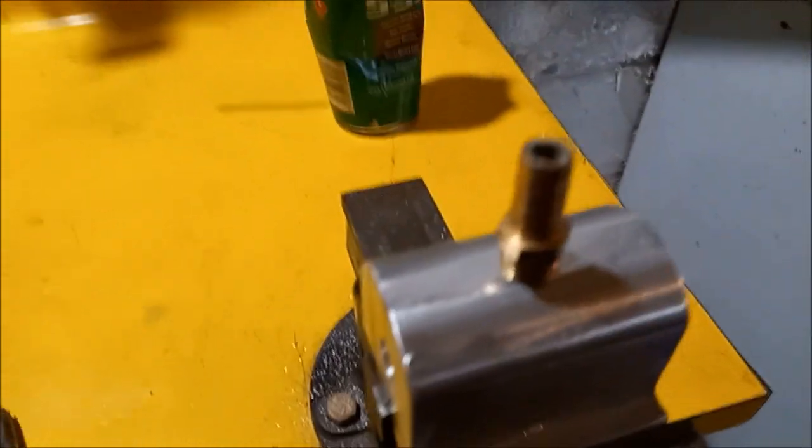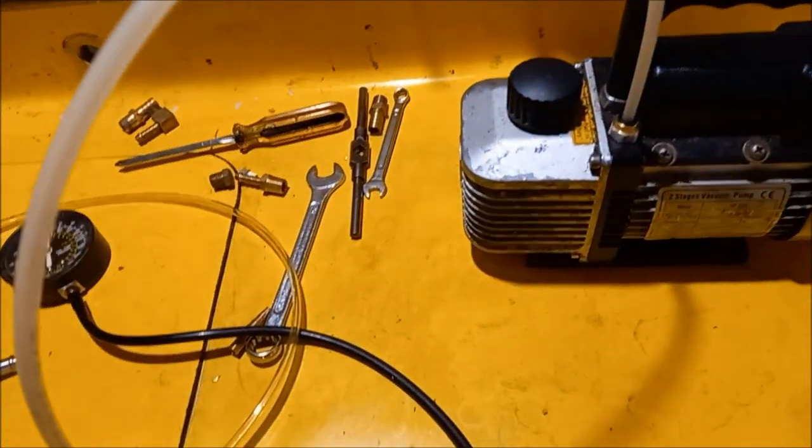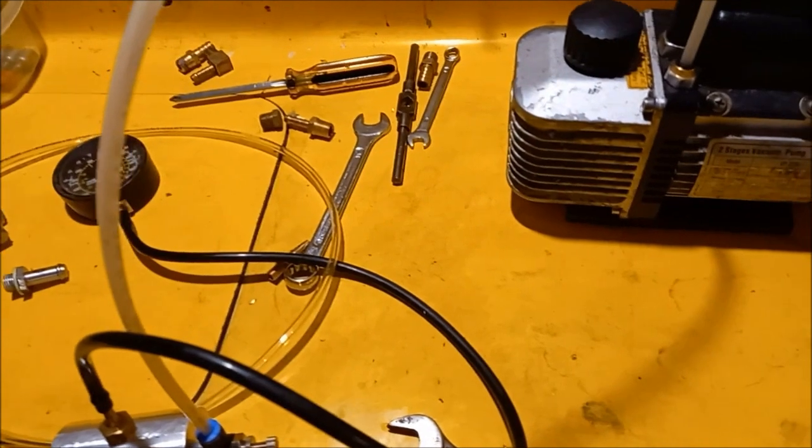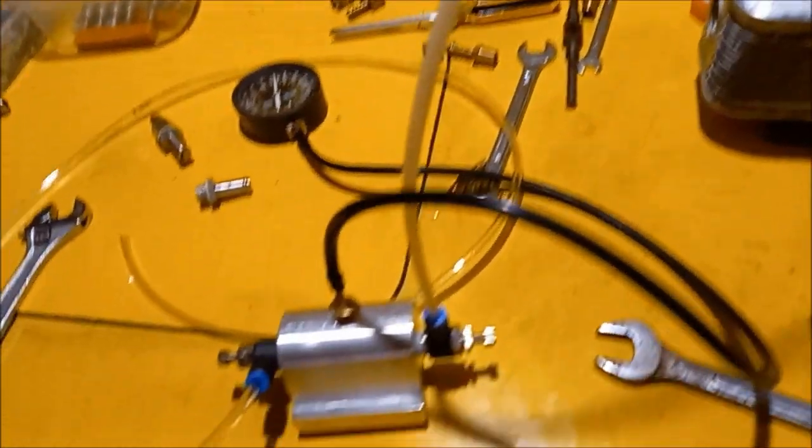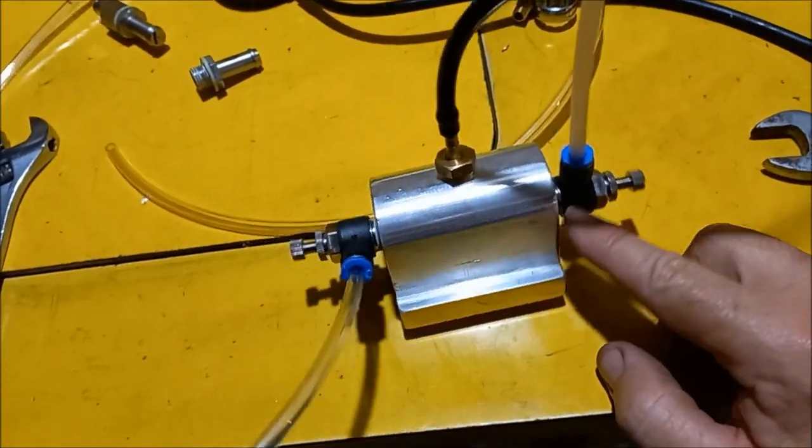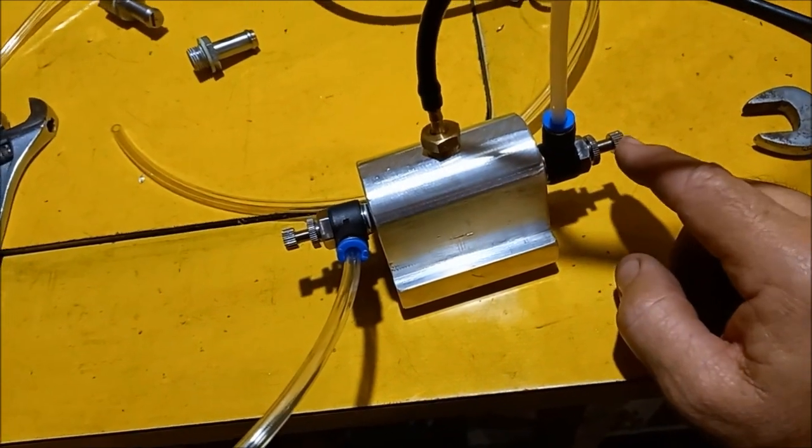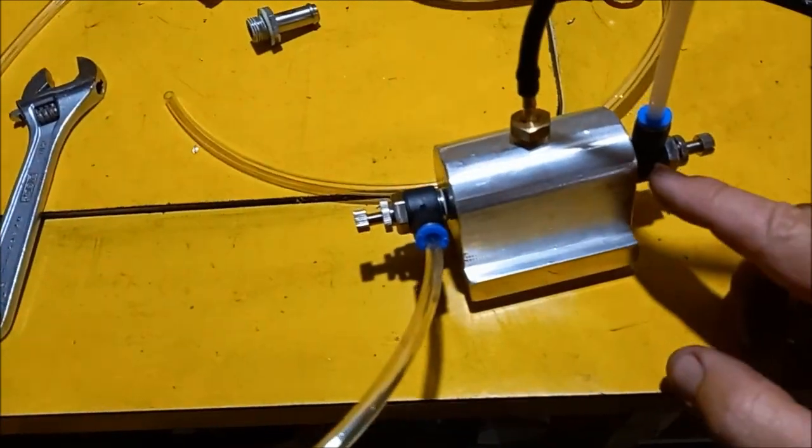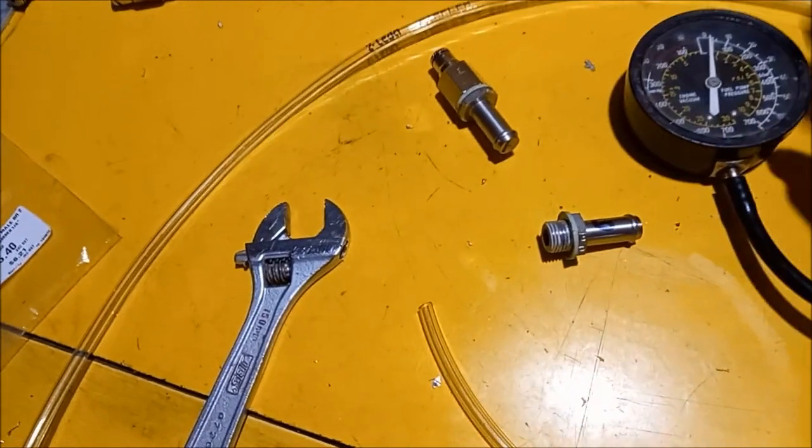So we've got a vacuum pump which can pull almost 30 inches of mercury into the manifold. We've got the valve open, so we've got full flow. We've got our gauge.